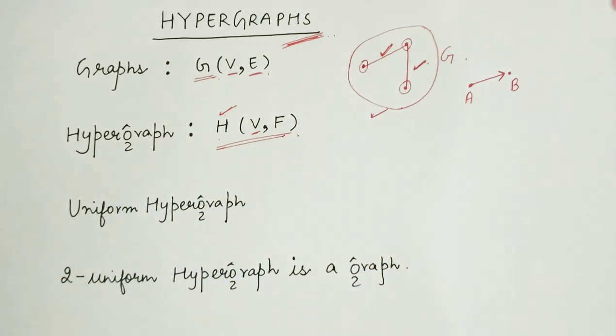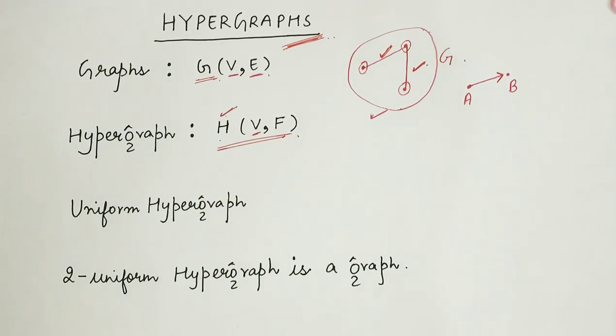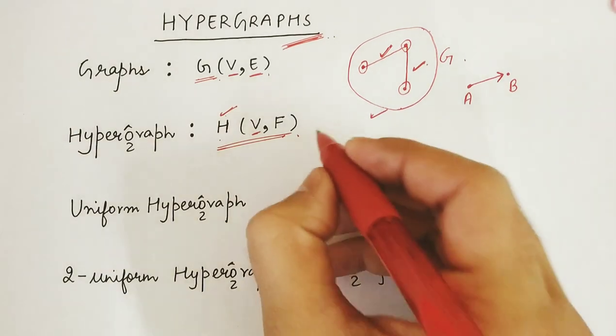V will still be the same and still represent the vertices of the hypergraph. And F represents the hyperedge set where each hyperedge is a set of vertices.